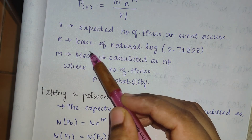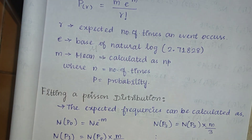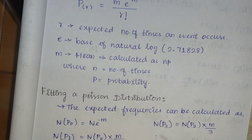Here, e is the constant value 2.71828, and m is the mean. The mean is calculated as n times p, where n is the number of trials and p is the probability.